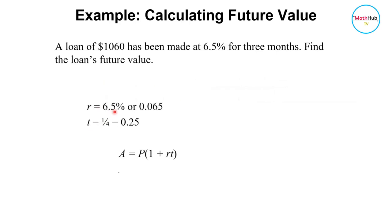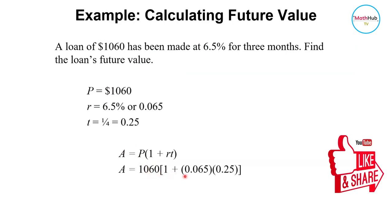And the rate, which is 6.5%, will be expressed as decimal. And this one is the present value. To use the future value formula, you just have to plug in these values here. So P is 1,060 times 1 plus the rate, which is 0.065, times 0.25, that's the time, because three months is 1 fourth of a year.